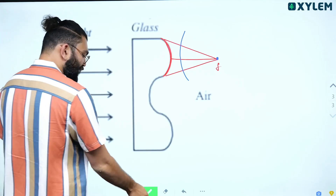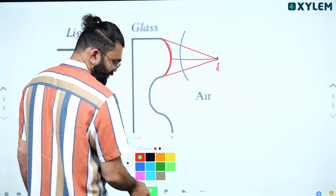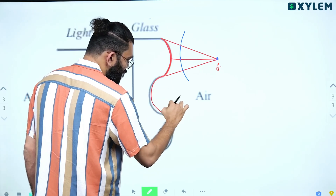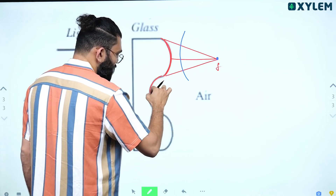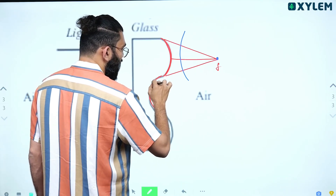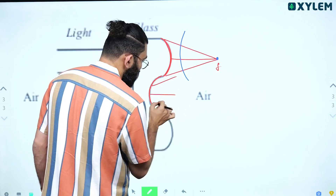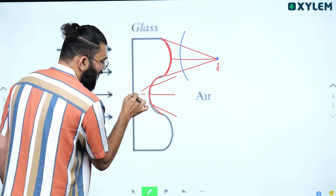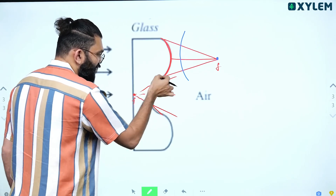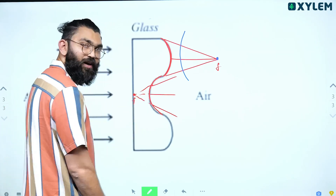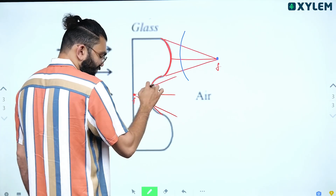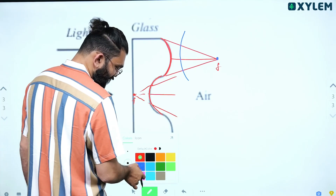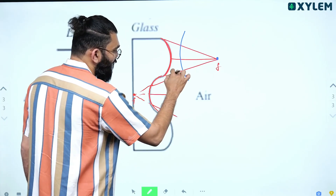Coming to the middle part — the middle part is similar to a concave lens. After refraction, the light rays will diverge from a common point, and this common point will be the focus of this concave part. The shape of the wavefront will be spherical, but the centre will change and the shape of the wavefront will be like this.